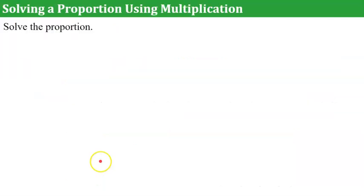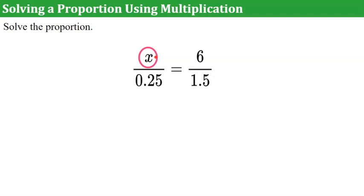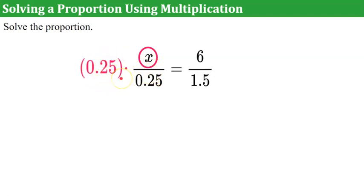Now let's learn how to solve a proportion using multiplication. We're given this proportion and we have an unknown value x. We know there's a statement of equality here — this ratio is equal to this ratio, forming a proportion. We're asked to solve for the value of x that will make this ratio equivalent to the other. We know that x is being divided by 0.25, and the inverse of divide is to multiply. If I multiply the left side of the equation, I must multiply the right side by the same value.